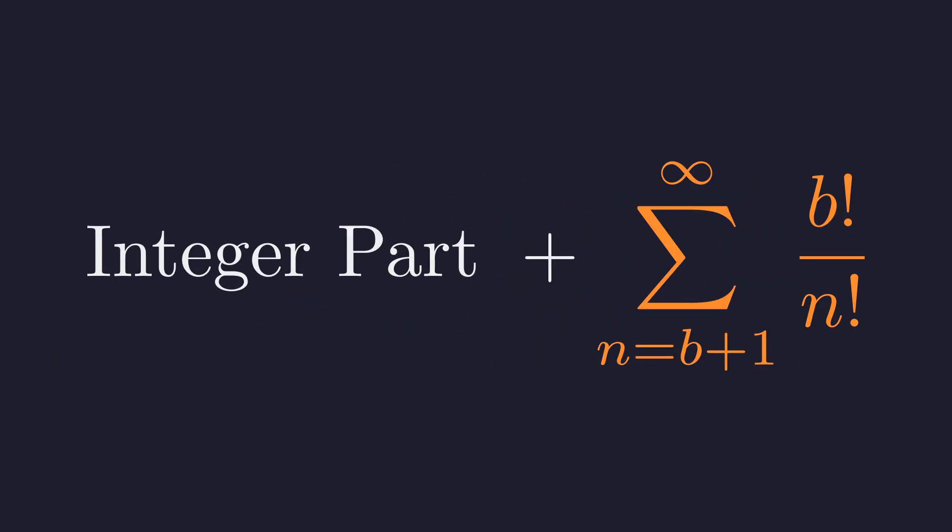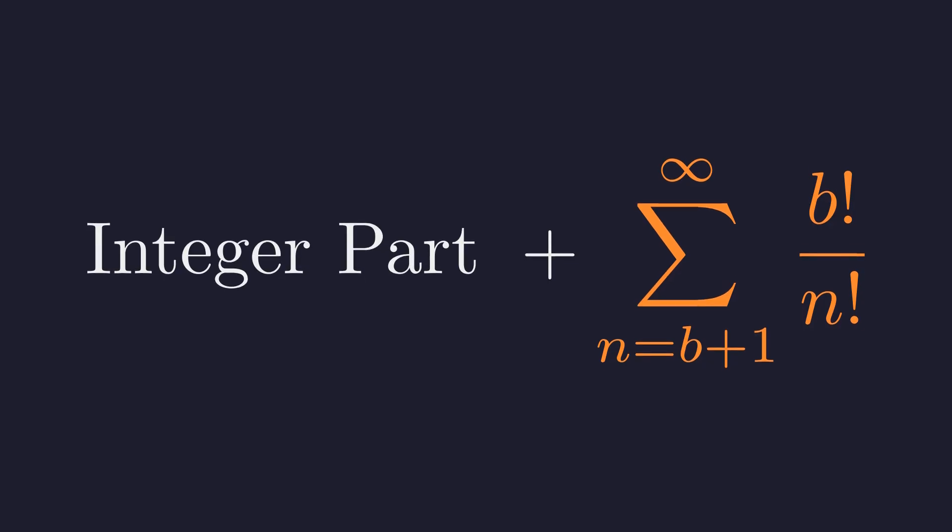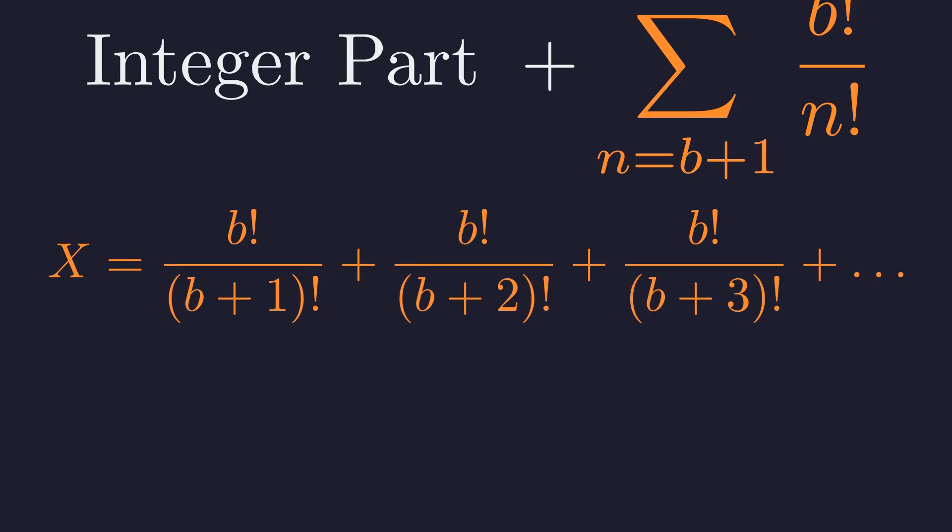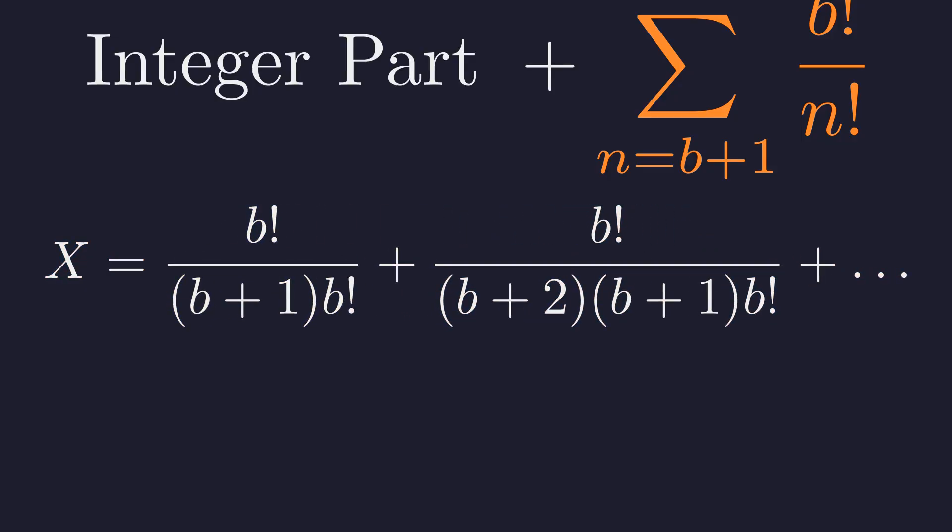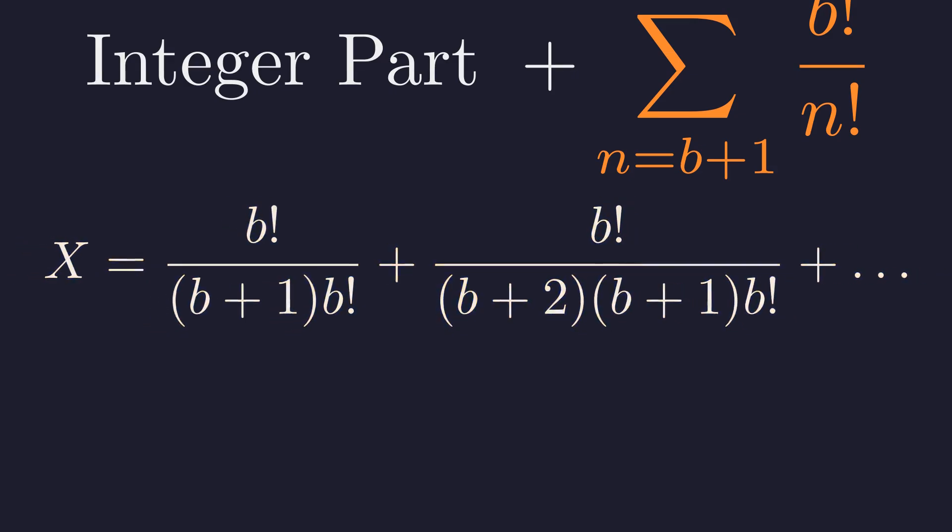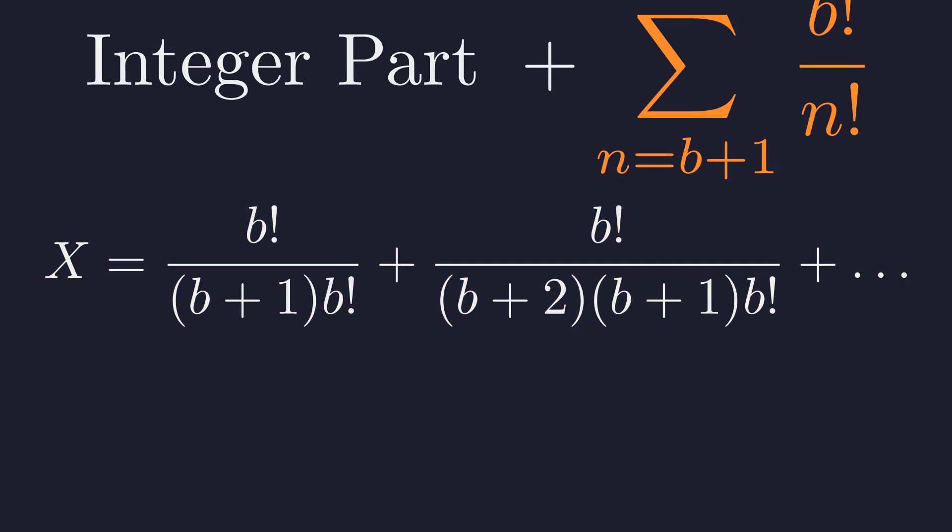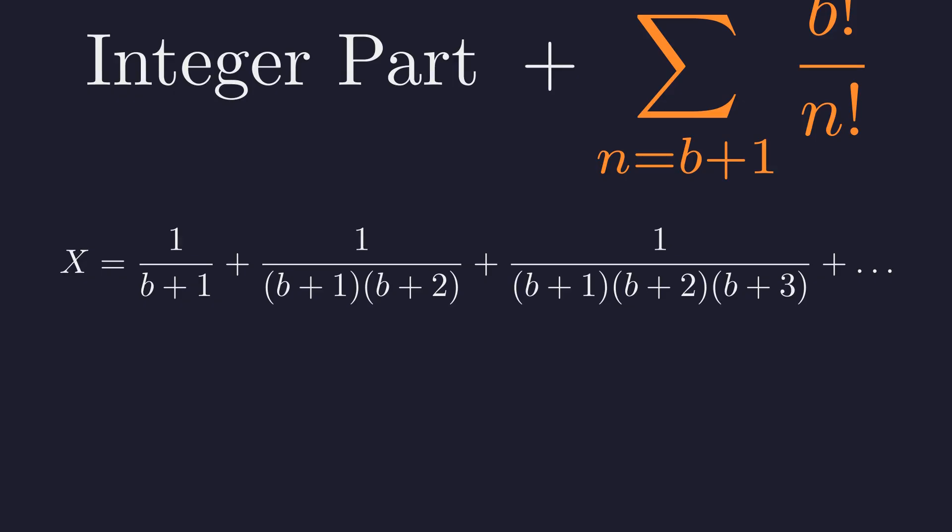Now let's analyze the second part, the tail of the series. We'll call this part X. Let's write out the first few terms of X. Consider the first term. B plus 1 factorial is simply B plus 1 times B factorial. By expanding the factorials in the denominators, we can see a common factor of B factorial. This allows for significant cancellation in every term. After simplifying, X becomes 1 over B plus 1, plus 1 over the product of B plus 1 and B plus 2, and so on.